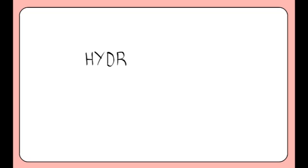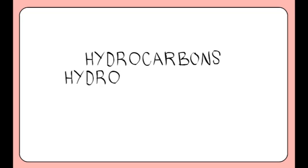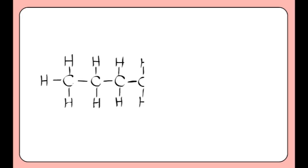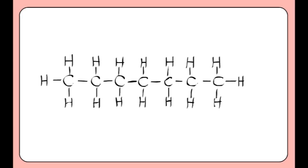The simplest organic molecules are the hydrocarbons. Hydrocarbons are made only from hydrogen and carbon. We will start with naming straight chain alkanes, which are hydrocarbons that contain only single bonds. These are called saturated compounds because you cannot get any more hydrogens on. They are completely saturated.